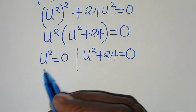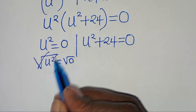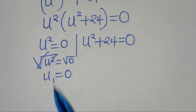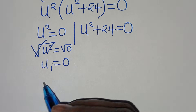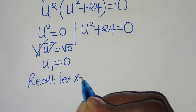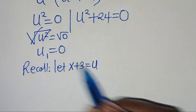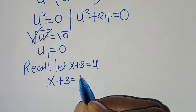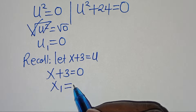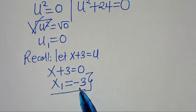Taking the square root of both sides gives u₁ equals 0. Recalling that x + 3 equals u, since u is 0, we have x + 3 equals 0, so x₁ equals minus 3. This is the first value of x and it is a real solution.